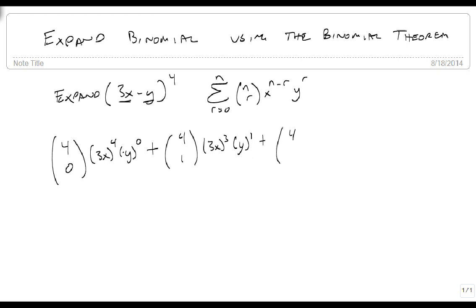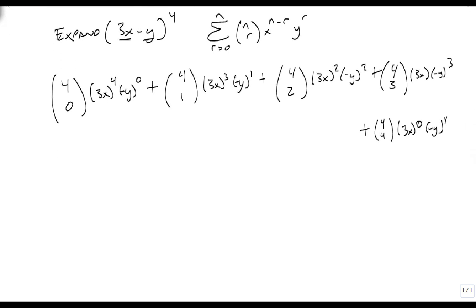Plus, not minus y to the 1, make sure you get your sign in there. 4 choose 2 of 3x squared minus y squared, plus 4 choose 3, 3x times minus y cubed, and I didn't give myself enough room.